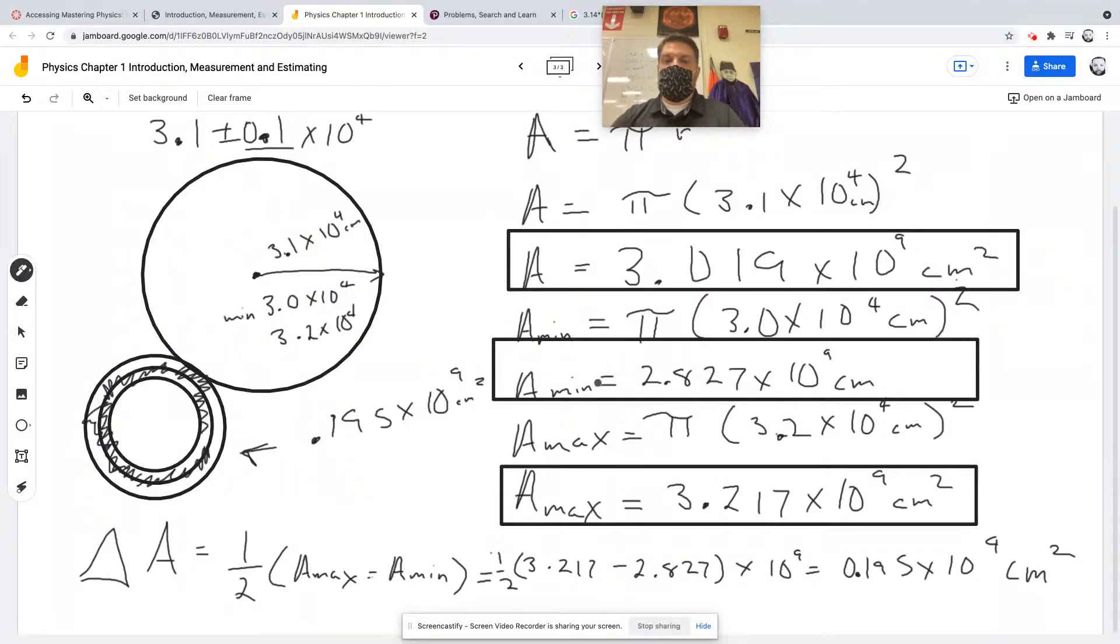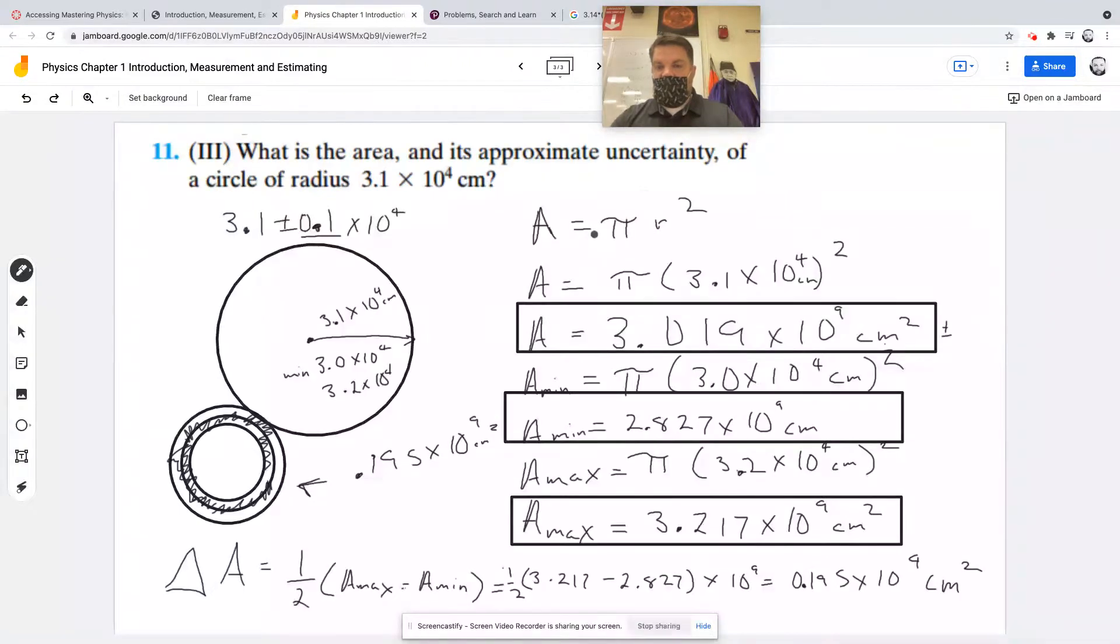So we can express the area as 3.019 times 10 to the 9th centimeters squared plus or minus 0.195 times 10 to the 9th centimeters squared. Does that make sense? Okay. That's a good question.